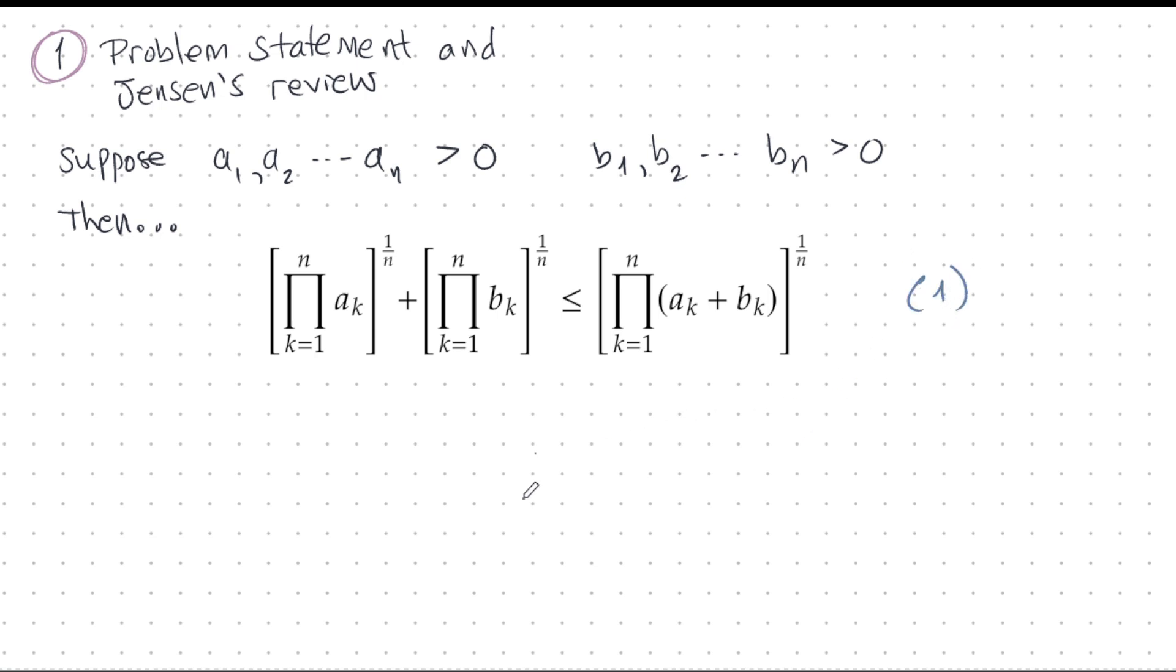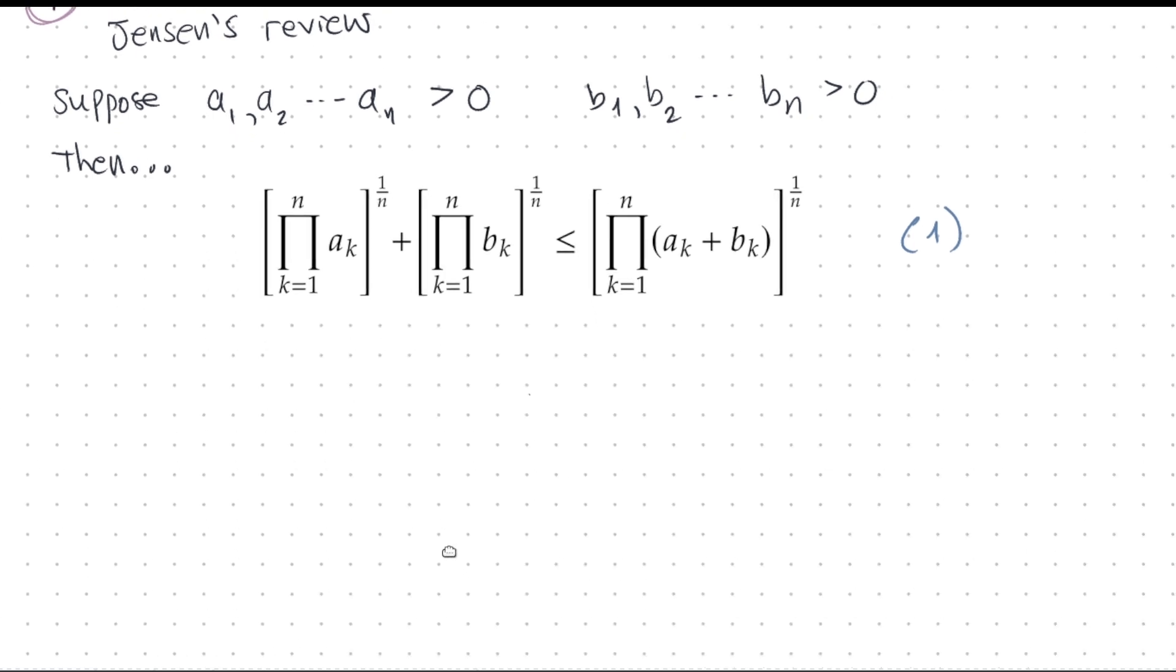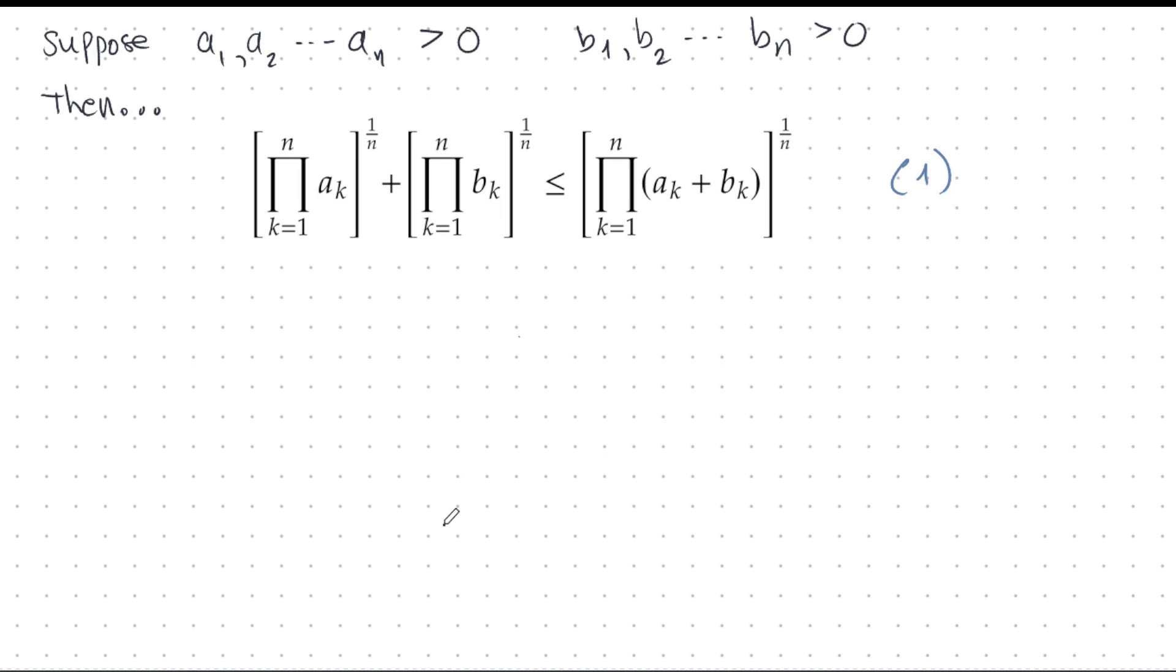Let's call this expression 1. I wrote it in this compressed way so that I could fit it into the thumbnail. So, let's unroll this a bit and see what this all means. The first term is the nth root of the product of all the aₖ's. Second term is likewise, nth root of the product of all the b's, and that's less than or equal to this. It's the product of all these pairwise sums of the a's and b's, and I take the nth root of that.